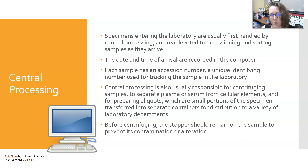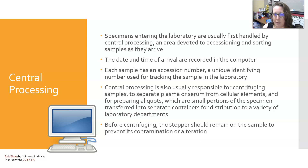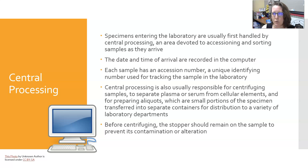Central processing is an area devoted to accessioning and sorting samples as they arrive. Accessioning a sample is recording the date and time of arrival in the computer, along with the date and time of collection, which is usually not the same as the date and time of arrival into the lab. Each sample has an accession number, which is a unique identifying number used for tracking the sample in the lab, associated with a specific order that the physician entered.